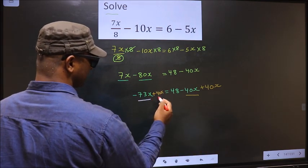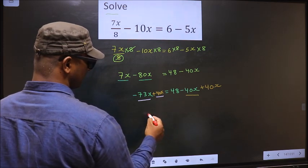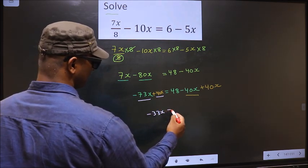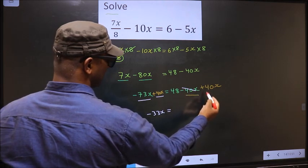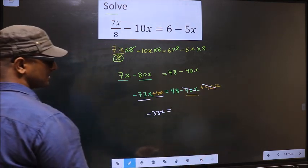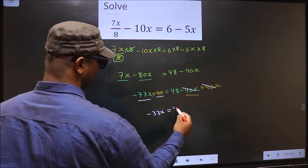Now minus 73x plus 40x will result in minus 33x equals—minus 40x plus 40x cancel out. You are left with 48.